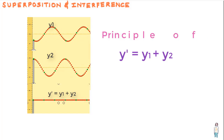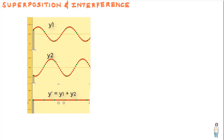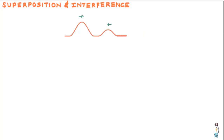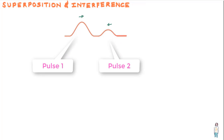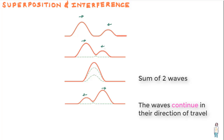Let us examine the sequence of snapshots of two pulses moving in opposite directions on the same string. Per the principle we have just defined, when these pulses overlap the resultant pulse should be their sum, and this is exactly what happens. You can also see that overlapping waves do not in any way alter the travel of each other.